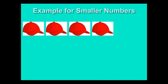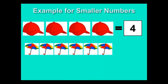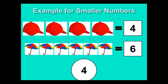1, 2, 3, 4. There are 4 caps. 1, 2, 3, 4, 5, 6. There are 6 umbrellas. The number of caps are less. So, 4 becomes the smaller number here.